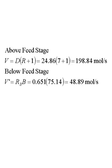With the reflux ratio and the boil-up ratio known, we can determine the vapor flow rate above and below the feed stage. Above the feed stage, the molar vapor flow rate is given by D times (R plus 1), in this case 198.84 moles per second. Below the feed stage, V prime is just Rb times B, and that is 48.89 moles per second.